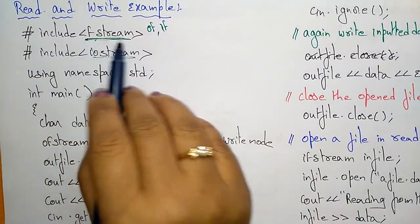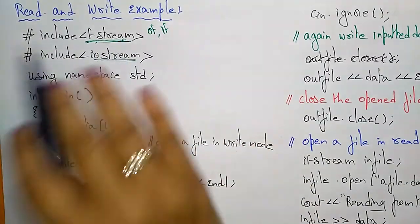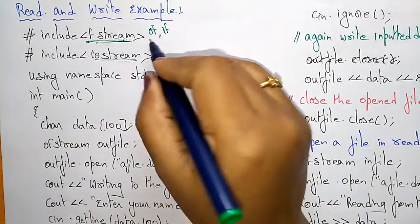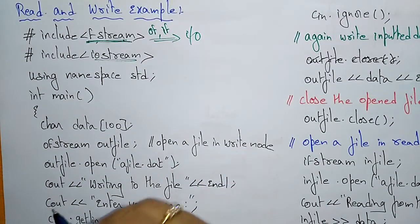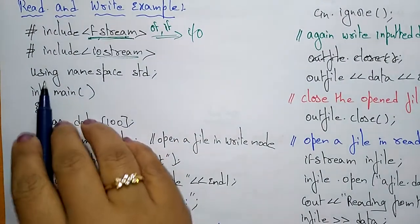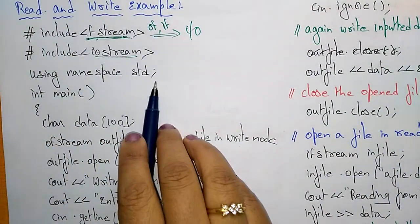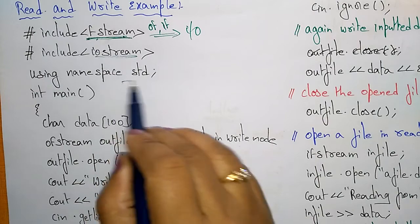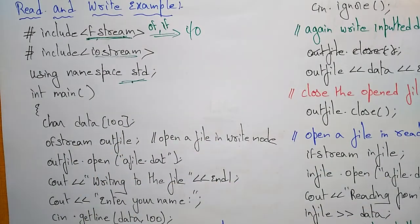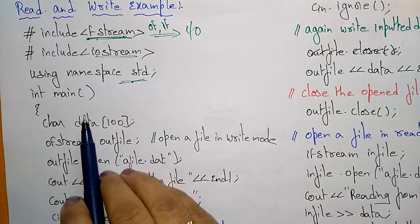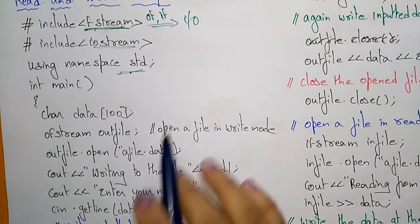This library function — fstream — will be used for the file I/O system. It is used for the file I/O system. Now coming to 'using namespace std'. This contains the entire C++ standard libraries, as I already explained. Now coming to the main program.